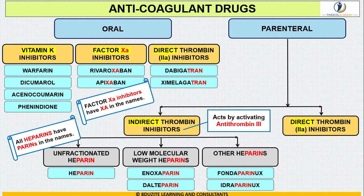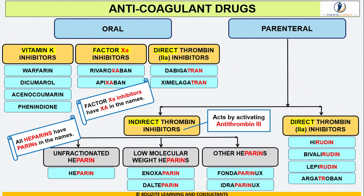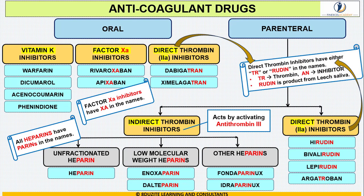The last group is parenteral direct thrombin inhibitors: hirudin, bivalirudin, lepirudin, and argatroban. Direct thrombin inhibitors have either 'tr' or 'rudin' in their names — 'tr' reflects thrombin, 'an' means inhibitor, and 'rudin' is a product derived from the leech. In summary: if you see 'tran' (tr + an) it is an oral direct thrombin inhibitor; if you see only 'tr' or 'rudin' without the 'an' immediately following, they are parenteral direct thrombin inhibitors; and if you see 'parin', they are indirect parenteral thrombin inhibitors.